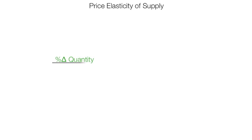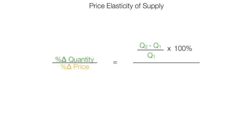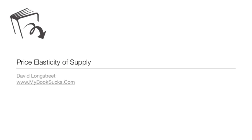The official formula for price elasticity of supply is percentage change in quantity divided by percentage change in price. Your textbook probably has a formula like this: Q2 minus Q1, where Q2 is the new quantity and Q1 is the old or initial quantity, divided by P2 minus P1 divided by P1, where P2 is the new price and P1 is the first or initial price. And that's been price elasticity of supply. Good luck in your classes.